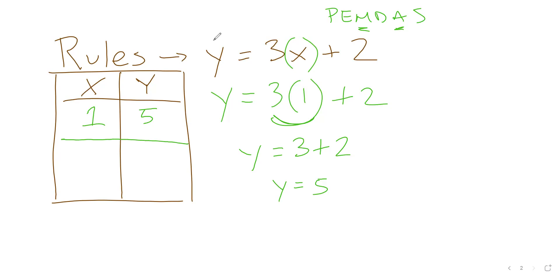So let's do that work. The order of operations states that I'm going to do my multiplication before I do any addition. So 3 times 1 is 3 plus 2. So Y is equal to 3 plus 2, which means Y is equal to 5. So that may be the first thing I plot is I have these coordinates of 1, 5.